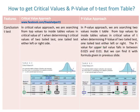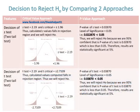To get critical values and p-value of the t-test from the table: in the critical value approach, we search from top values to inside table values to determine t-critical for two-tailed, one-tailed left, or one-tailed right. In the p-value approach, we search two inside t-table values from top to inside to determine the p-value for two-tailed or one-tailed tests. The p-value for the upper tail falls between 0.025 and 0.1, but can be found with the interpolation formula.